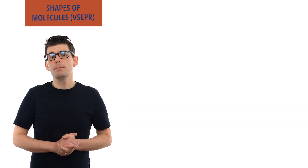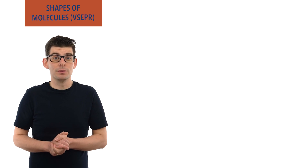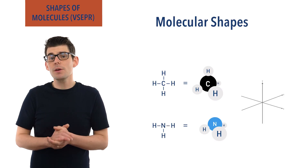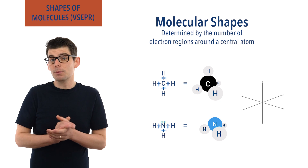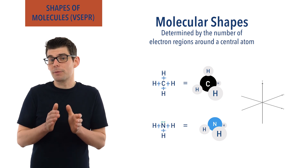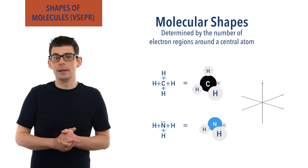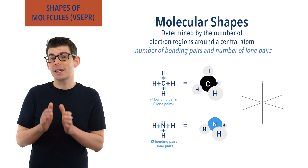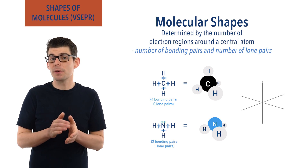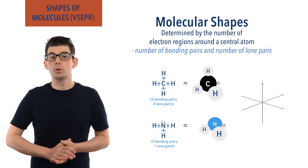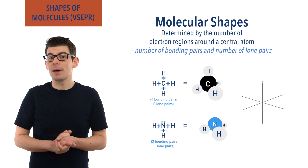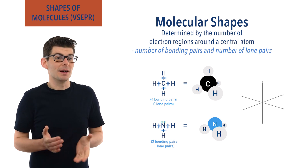Hello, Matt here from chemistrystudent.com. In this video we're going to look at shapes of molecules and VSEPR theory. The shape of a molecule or polyatomic ion is determined by the number of electron pairs around a central atom, and more specifically the number of bonding pairs and lone pairs. If these are known we can predict the shape of a molecule using valence shell electron pair repulsion theory, or VSEPR.